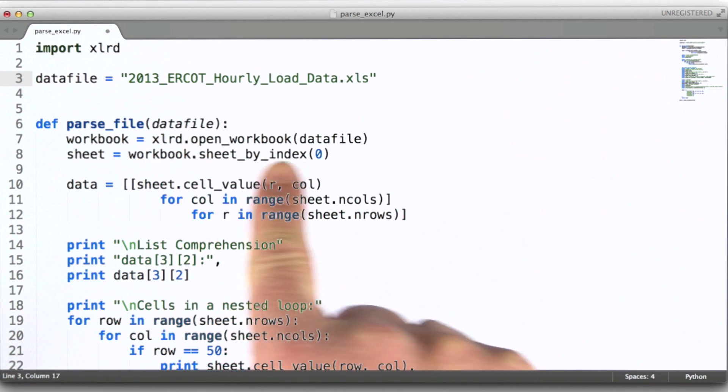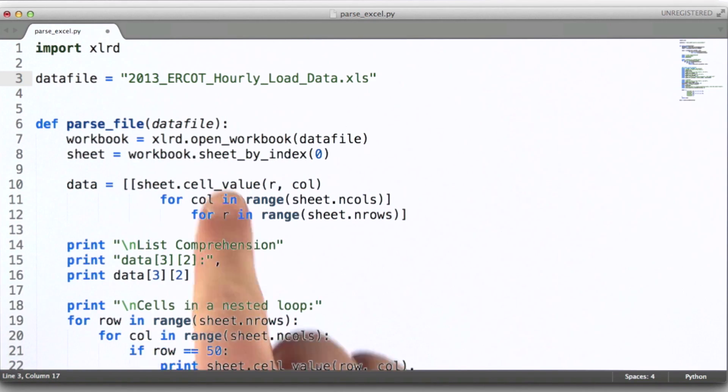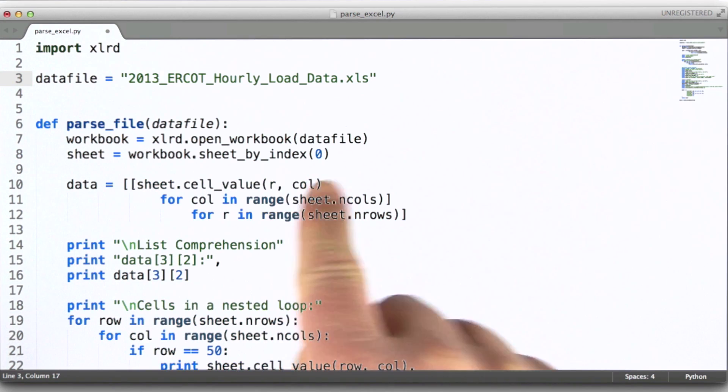So this is the command we use to open a workbook, and you'll note that we're using the same variable name here. And then we need to specify which sheet we'd like to work with. So here we're selecting sheet zero.